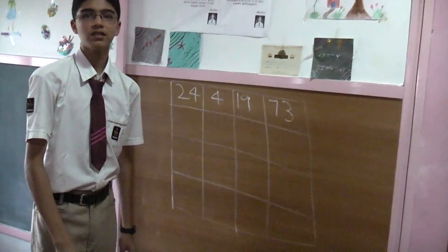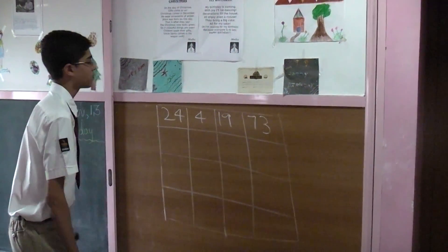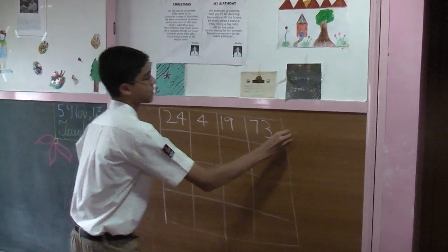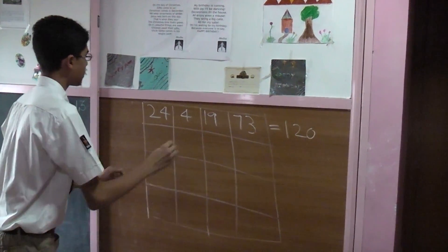On the top row, we have Sachin Tendulkar's birthday. Okay, here we go. 24 plus 4 is 28, 28 plus 19 is 37, 37 plus 73 is 120. So, 120 is the great magic number.